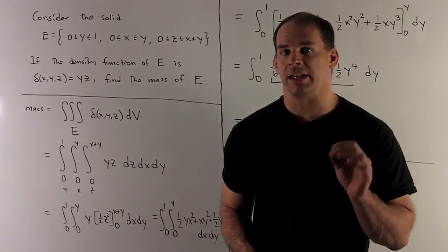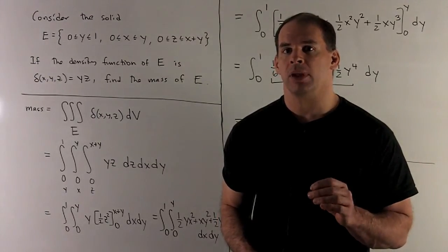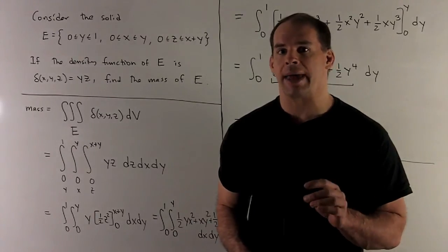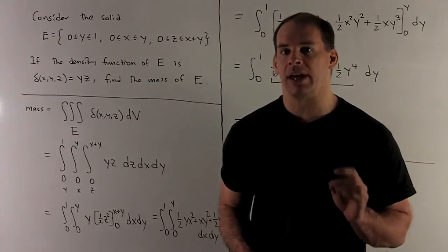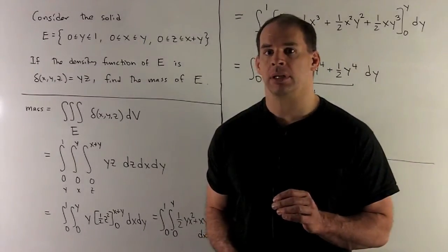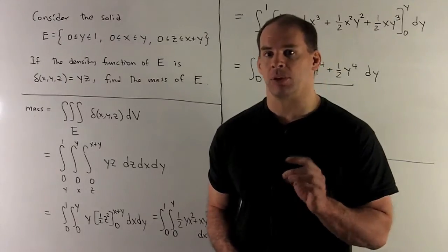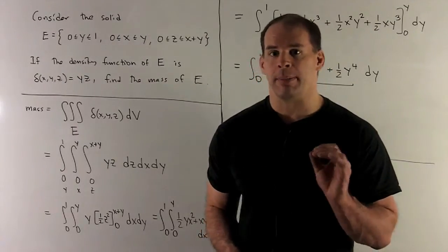Consider the solid in three space E, defined by y between 0 and 1, x between 0 and y, z between 0 and x plus y. The density function on E is given by δ(x,y,z) = yz. Find the mass of E.